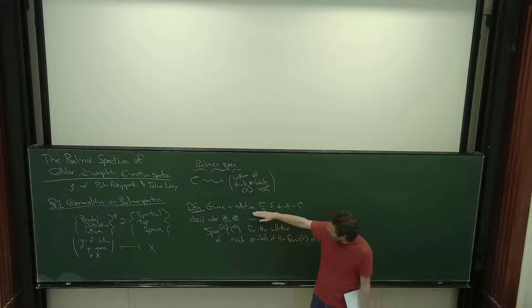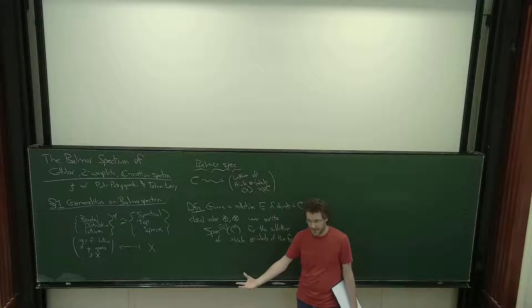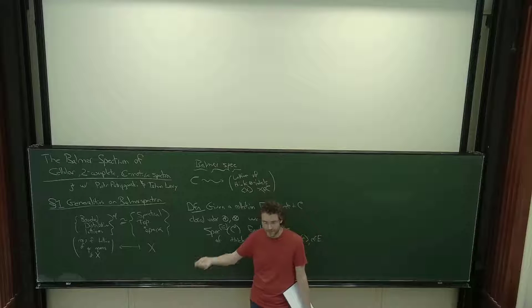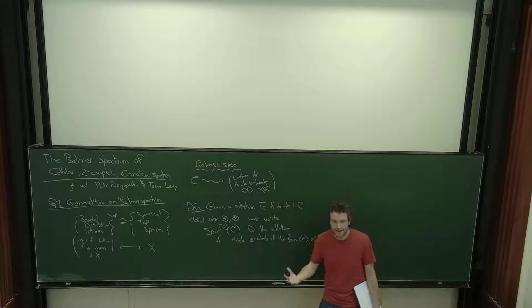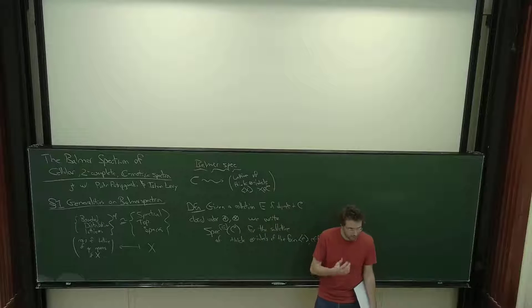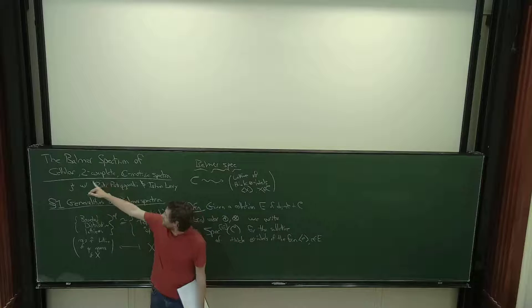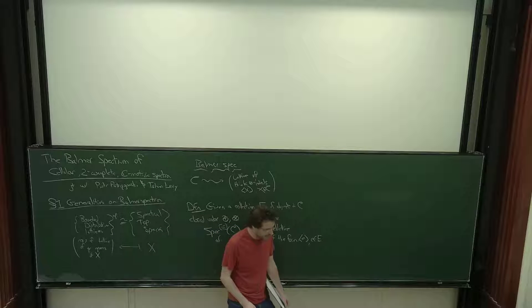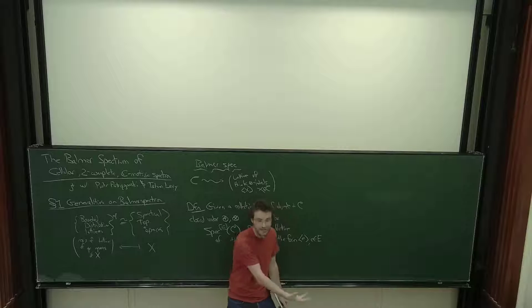If we put together a collection E of objects that I find easy to construct, and then separately prove that this inclusion of lattices is actually an isomorphism, it makes analyzing things a lot easier. It gives me a language to talk about the objects I find easy to build. Often the last and hardest step in analyzing the Balmer spectrum of a category like cellular two-complete C-motivic spectra is: I need a closed set right here, I need to have a quasi-compact open complement, so I need an object.